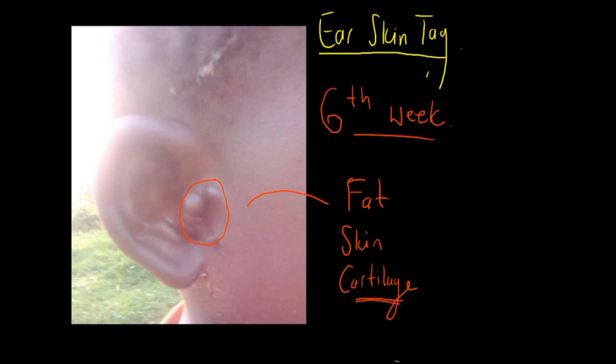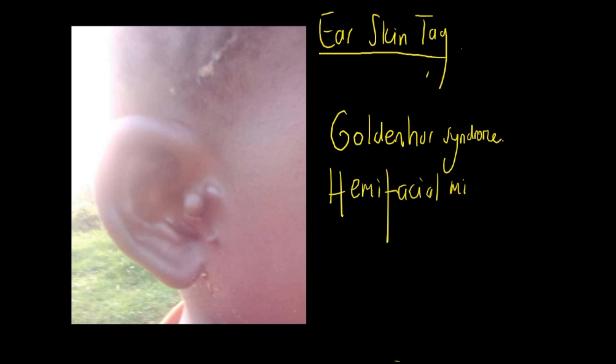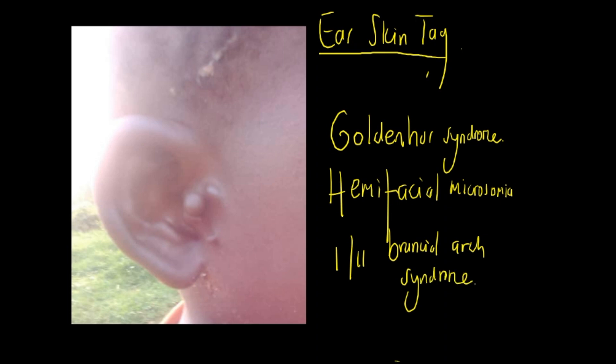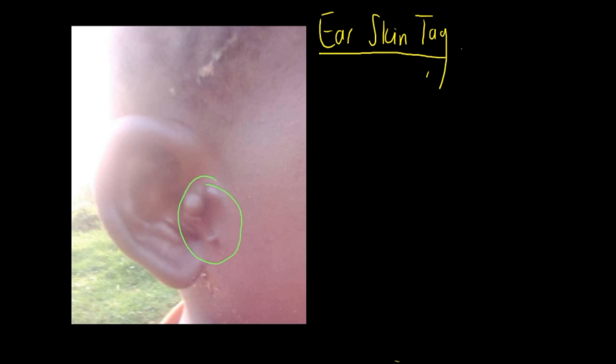That's important because it's going to influence the management. These can occur in isolation — they can just be a form of cosmetic abnormality. But they can also occur with other conditions such as Goldenhar syndrome, hemifacial microsomia, and first and second branchial arch syndrome.